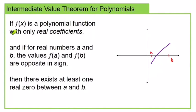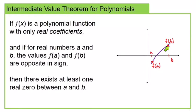Let's think about what this is saying. Polynomials with real coefficients have graphs that are nice, smooth, continuous curves. Here I've drawn a piece of a polynomial function graph with two x-values labeled a and b. f(a) is a negative y-value, and f(b) is a positive y-value. Since the curve is continuous, somewhere between a and b there has to be a function value equal to zero — the function must cross the x-axis.